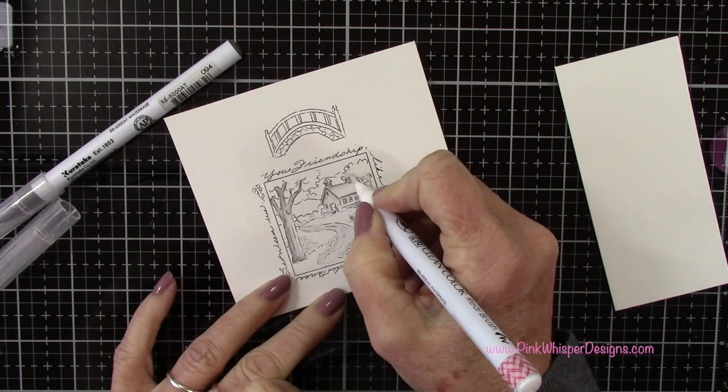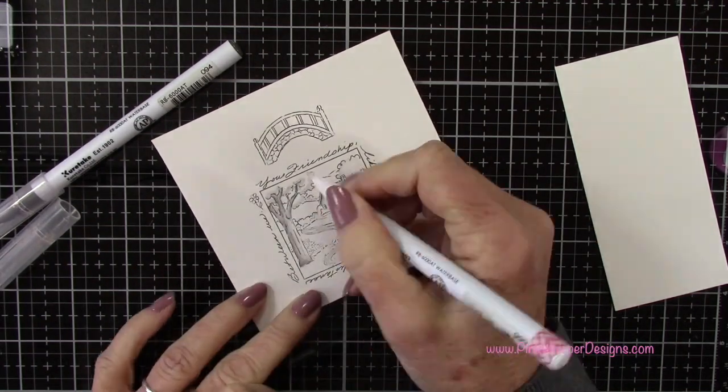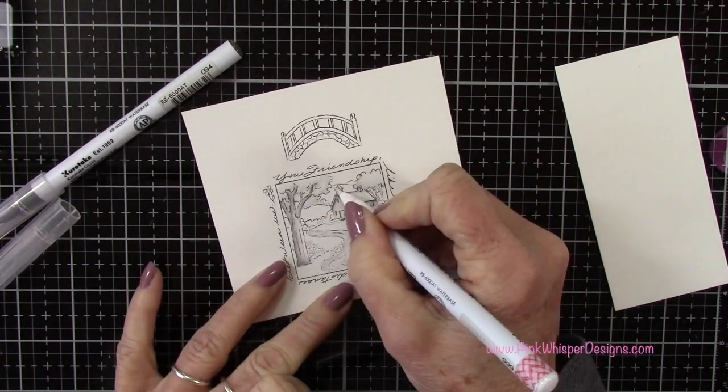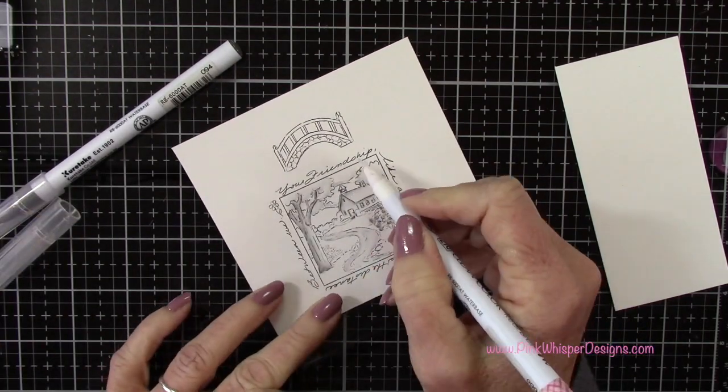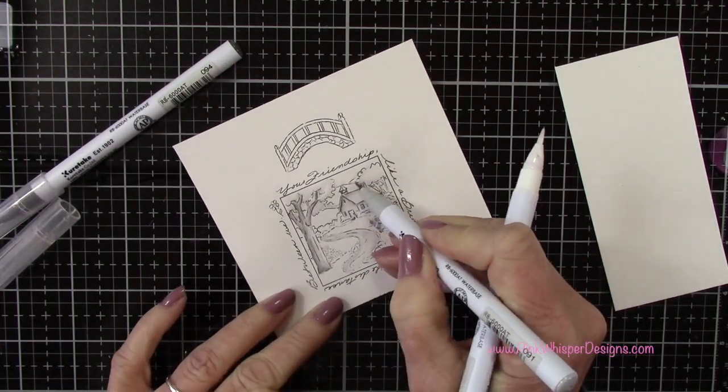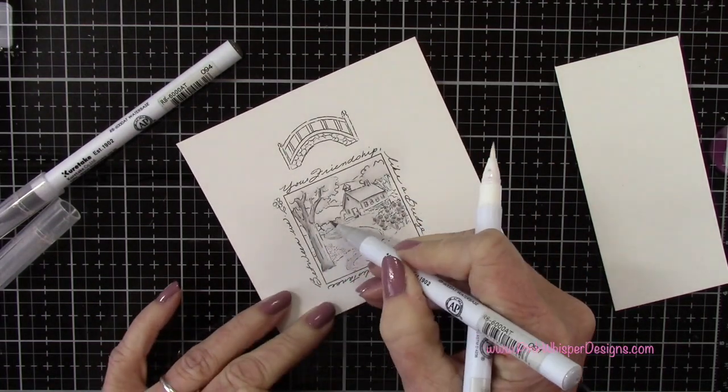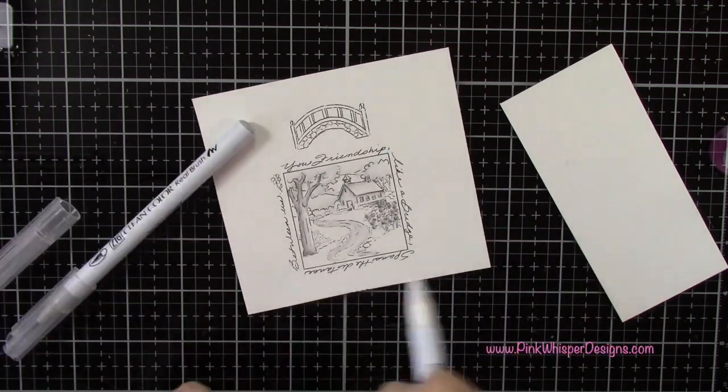There's four all together, and again for all of those sets you do need the shadow box window die set in order to create this shadow box effect. I'm going to continue coloring all of this in and each of those sets come with the coordinating die, like the one we're using today comes with the bridge die, the deer comes with a deer die, and so on.